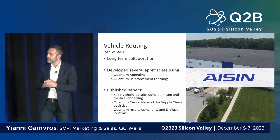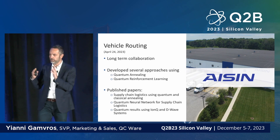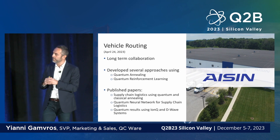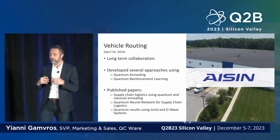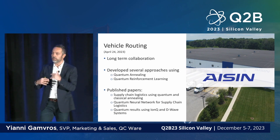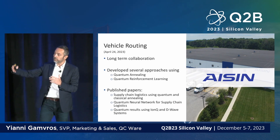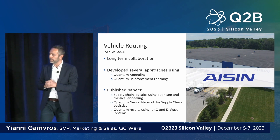We've worked extensively for several years with Aisin, the largest transmission manufacturer in the world — if you drive a Toyota, there's a 99% chance you have an Aisin transmission. We developed several approaches using quantum annealing and quantum reinforcement learning for vehicle routing, taking a machine learning approach rather than the typical route. We've published several papers with them.